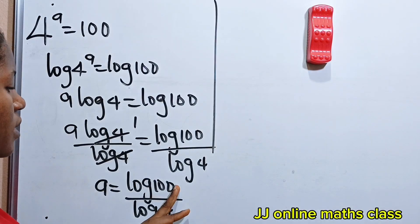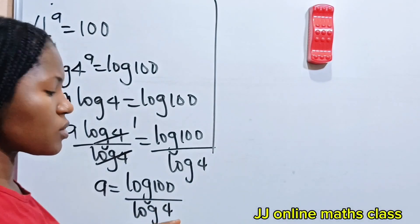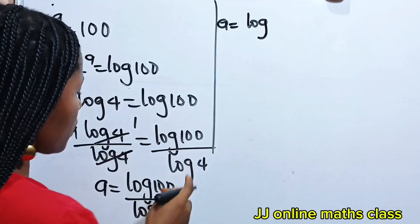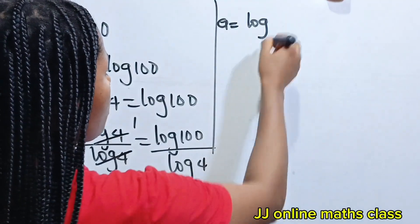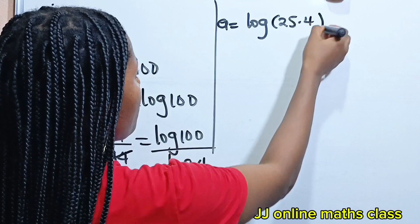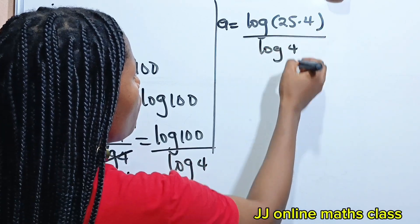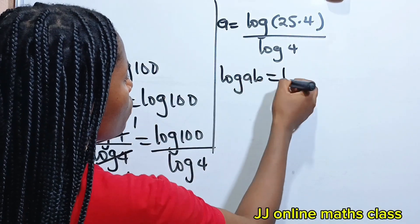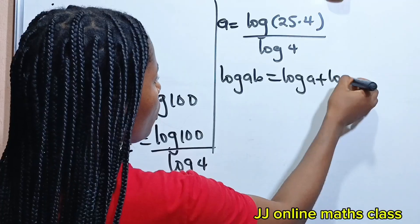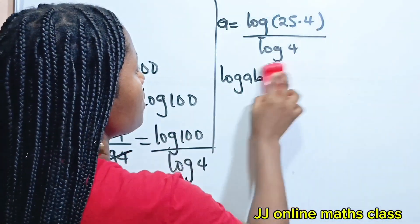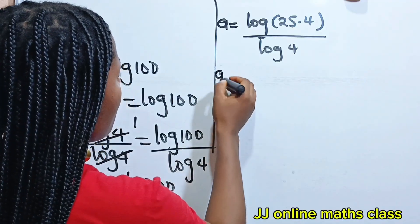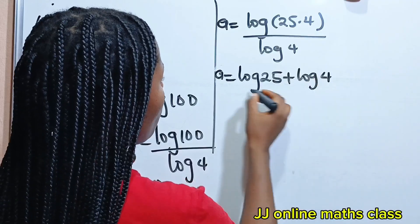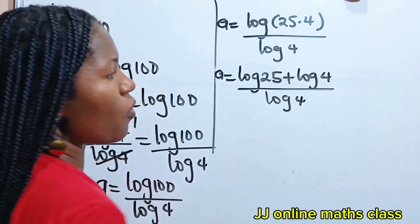Now we are going to express 100 in terms of 4, because we need to simplify this further. So we have A is equal to log of 25 multiplied by 4, divided by log 4. Now recall that log A multiplied by B is equal to log A plus log B. So that means we can write this as A is equal to log 25 plus log 4, divided by log 4.